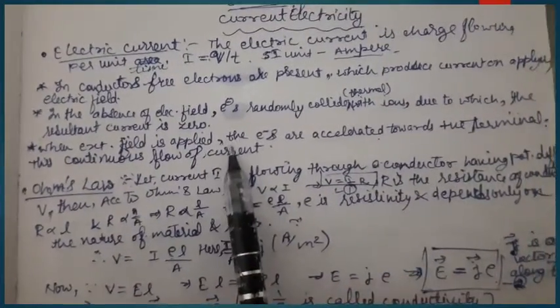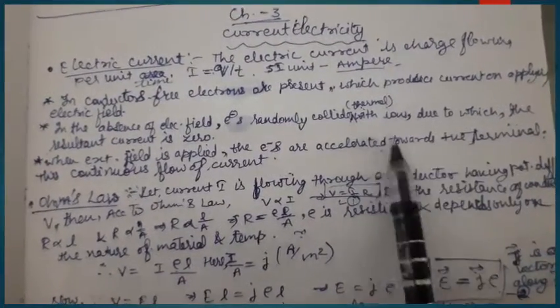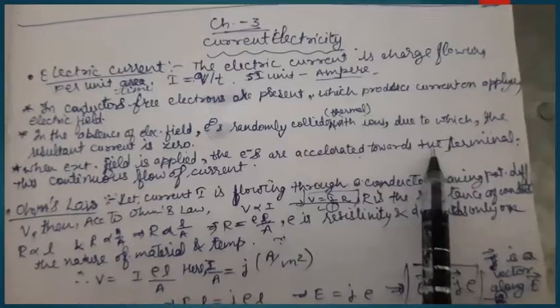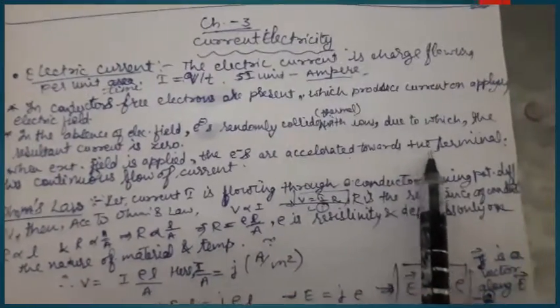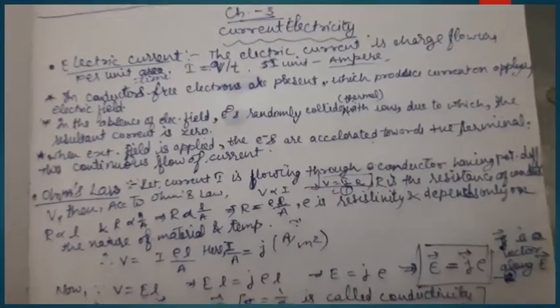When we apply an external field by connecting to a battery or source, all electrons are accelerated towards the positive terminal because they are negatively charged, producing a continuous flow of current.